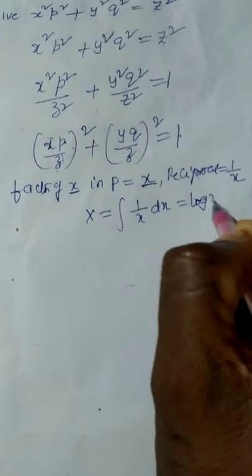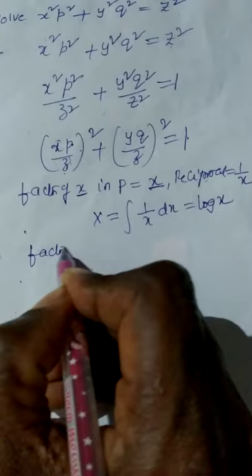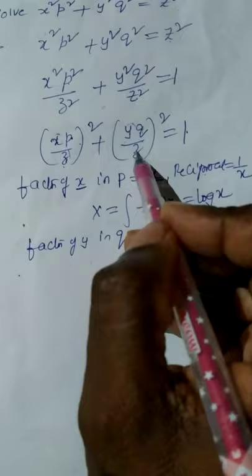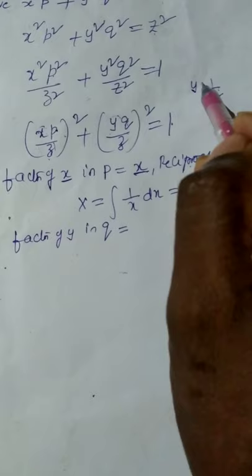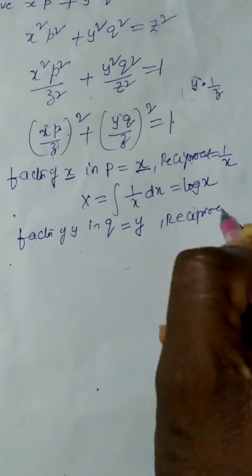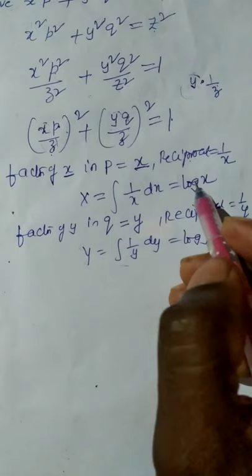To merge small y in q, we consider the factor of y in q. The quotient of q is y/z = y × (1/z), so it has two factors: y and 1/z. The y factor is y, and its reciprocal is 1/y. So we take capital Y = ∫(1/y)dy = log y. To convert into standard form 1, z must be eliminated.